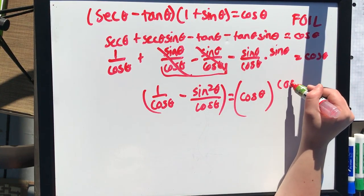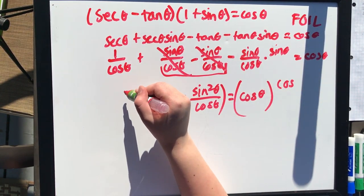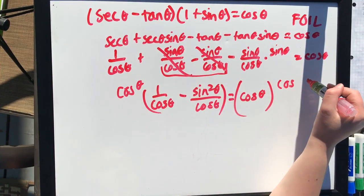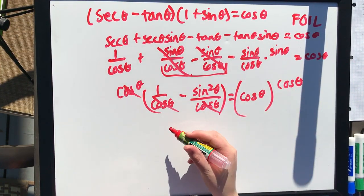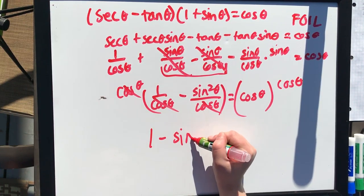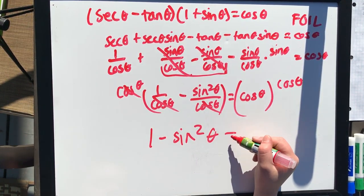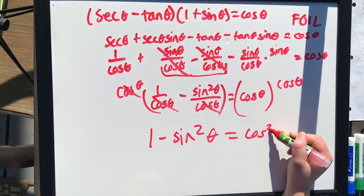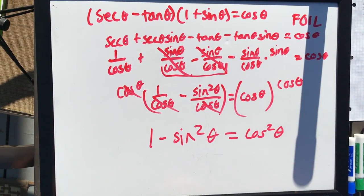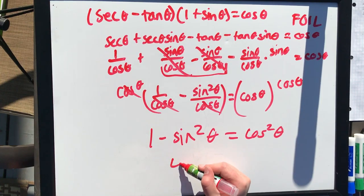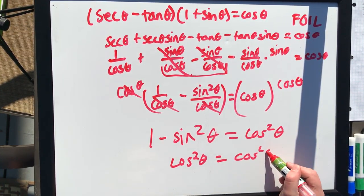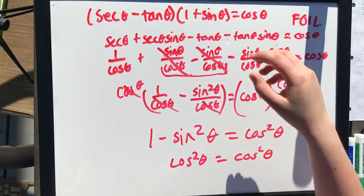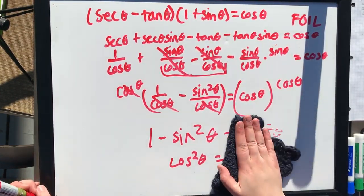We do fraction math and multiply by cosine. This gives us 1 minus sine squared theta equals cosine squared theta, which is also a Pythagorean identity. So this becomes cosine squared theta equals cosine squared theta, and we have verified yet another identity.